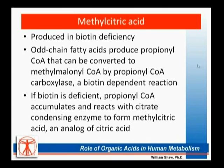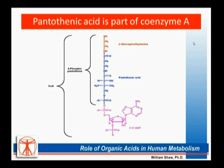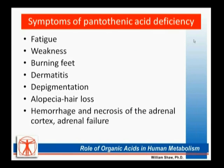The marker used to detect biotin deficiency is methylcitric acid — it is only elevated in biotin deficiency. As a result of biotin deficiency, propionyl-CoA reacts with a citric acid metabolite to form methylcitric acid. Turning to another vitamin, pantothenic acid — also considered a B vitamin and part of coenzyme A, which is completely different from vitamin A — is measured directly in the organic acid test. Deficiency causes fatigue, weakness, burning feet, dermatitis, hair loss, loss of skin pigmentation, and can lead to adrenal failure.